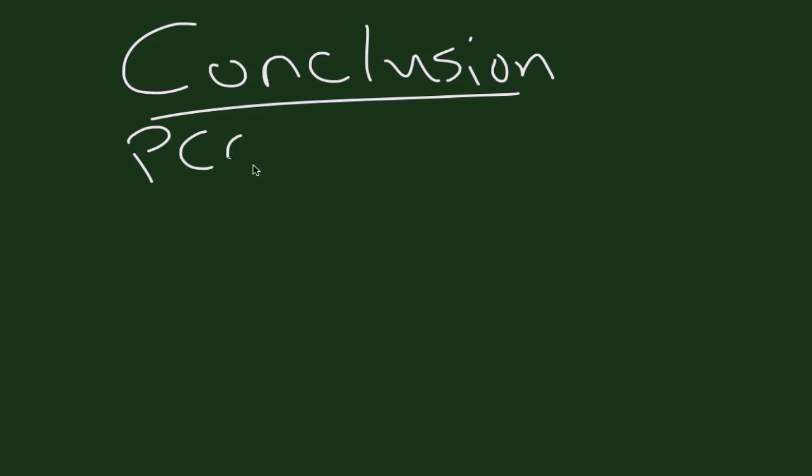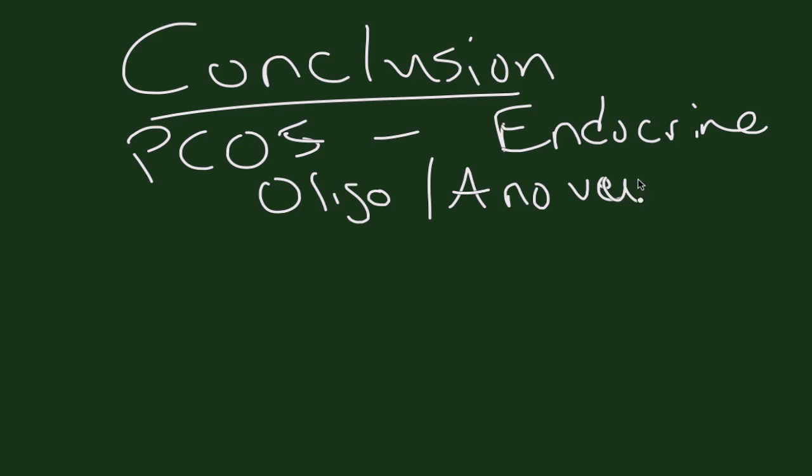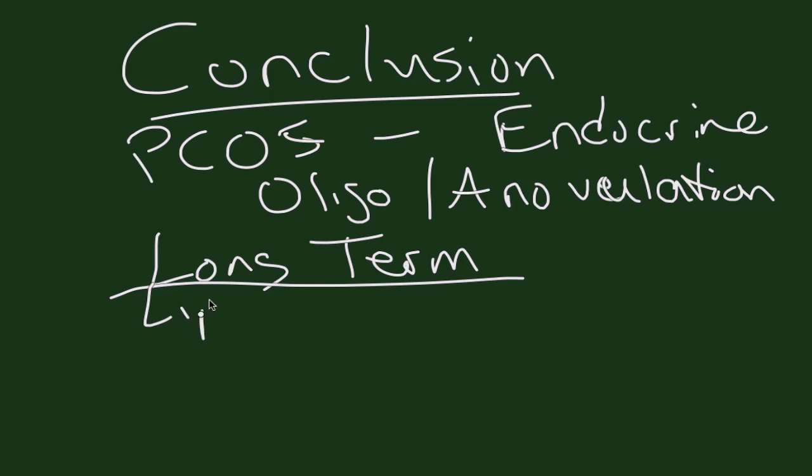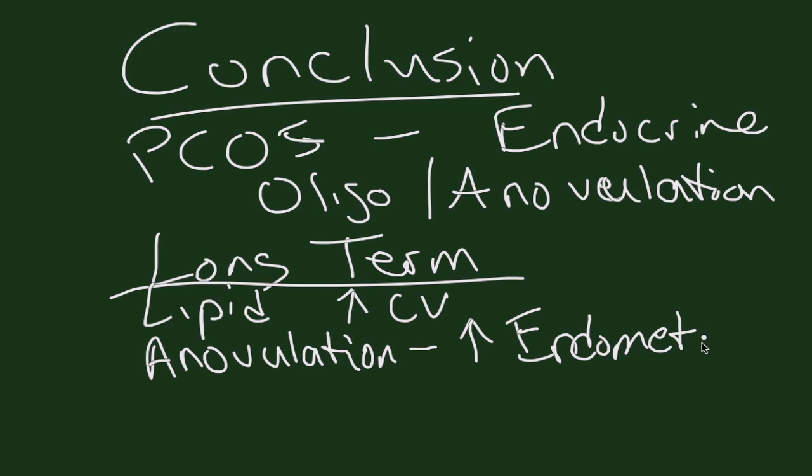So in conclusion, PCOS is a very broad category affecting a number of endocrine systems. The diagnosis is from that Rotterdam criteria after you have eliminated other causes of oligo or anovulation or amenorrhea. And you have to think about long-term consequences for the patient with PCOS. We've already talked about the lipids and how that can increase cardiovascular issues. One thing I did mention was as they're seeing this chronic anovulation, they're not having normal shedding of their endometrium. So you can have endometrial hyperplasia, which can lead to frank cancer in some patients. So you have to consider doing an endometrial biopsy on these patients.